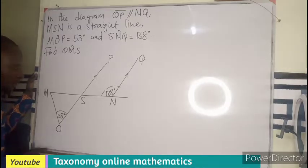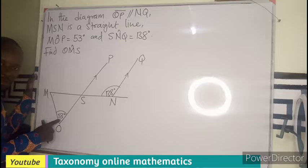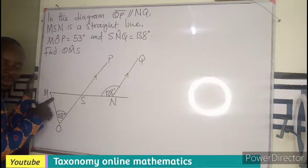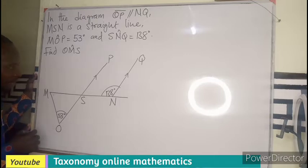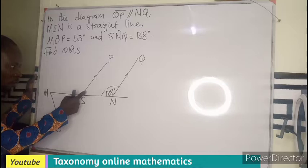So the moment I know this value, add it to 53, I should be getting this angle, or add up to 180. So the task is to find either this angle or this angle to help us know the very size of this angle.